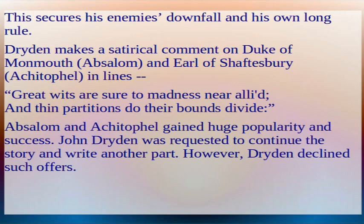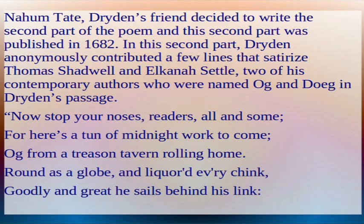Dryden makes a satirical comment on the Duke of Monmouth (Absalom) and the Earl of Shaftesbury (Achitophel) in the lines: 'Great wits are sure to madness near allied, and thin partitions do their bounds divide.' Absalom and Achitophel gained huge popularity and success. John Dryden was requested to write another part but declined. Nahum Tate, Dryden's friend, decided to write the second part, published in 1682. In this second part, Dryden anonymously contributed lines satirizing Thomas Shadwell and Elkanah Settle, two contemporary authors named Og and Doeg in Dryden's passages.